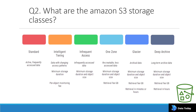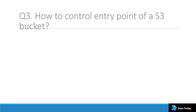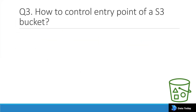Amazon will charge you less for storing data in Glacier and Deep Archive. However, retrieval takes longer — in minutes or hours — unlike Standard, Intelligent Tiering, and Infrequent Access, where you can access data in seconds.